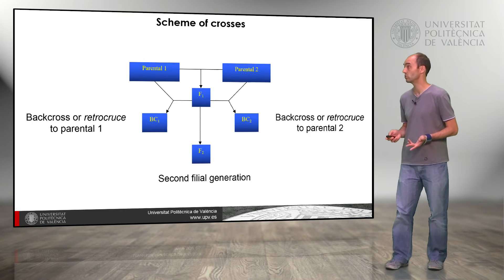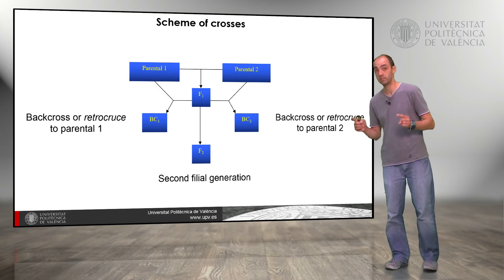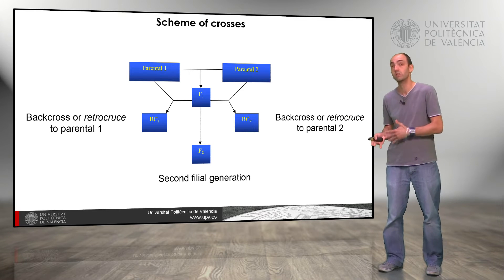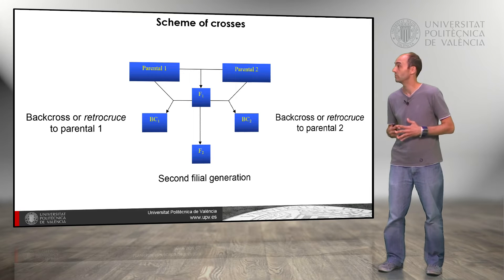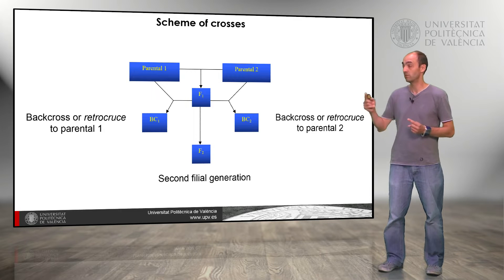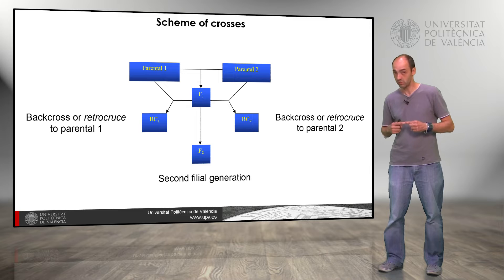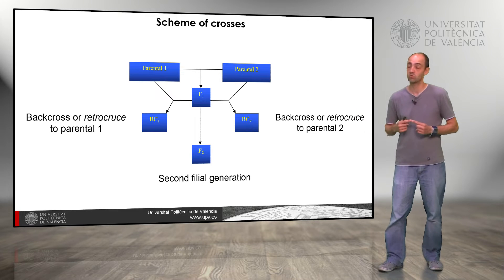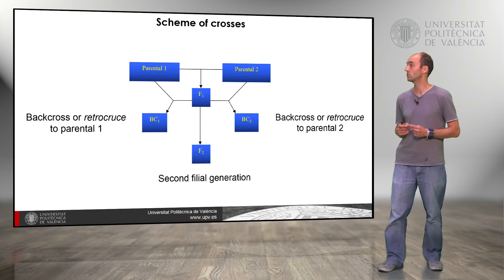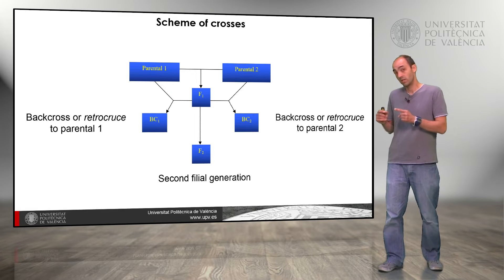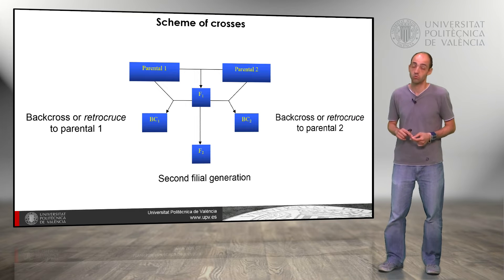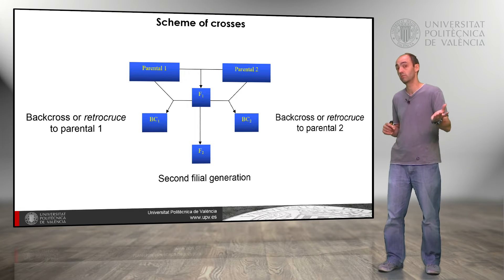Which schema of crosses can we use? Here we have a typical schema of crosses. We have two parental flies — we can use a wild fly, for example, to cross with a mutant fly, or we can cross two different mutant flies. When we cross them we produce the F1 generation. We can allow those F1 flies to cross to get the F2, the second filial generation. If we cross the F1 with one of the parental flies, we make a backcross — 'retrocruza' in Spanish — and we can use that with parental one or parental two flies.